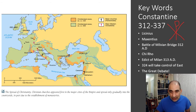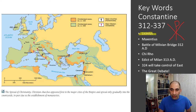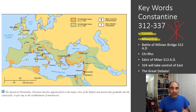Between 312 and 337 AD, Constantine plays a significant role first in the West, then in the East, and eventually all of Rome. After Diocletian died, a man named Licinius took control of the eastern part of Rome. In the West, there was a conflict between two men — Constantine and Maxentius — leading to a major battle in 312 AD known as the Battle of Milvian Bridge.